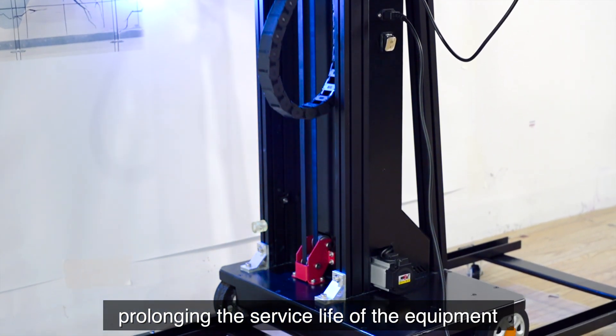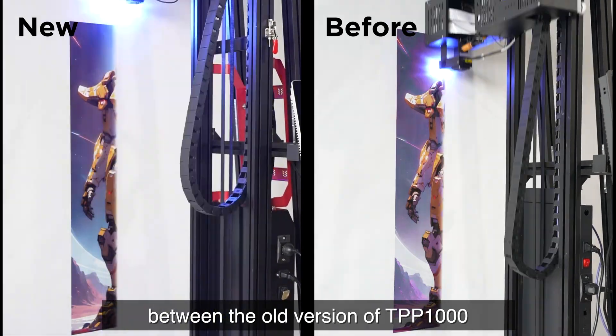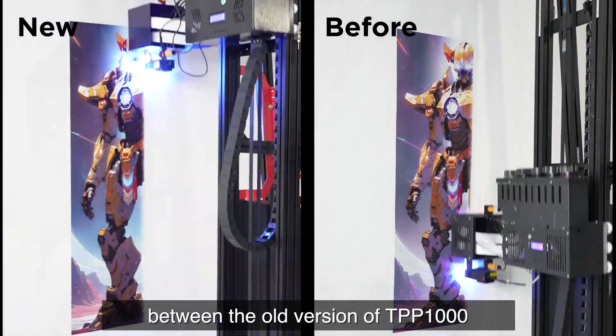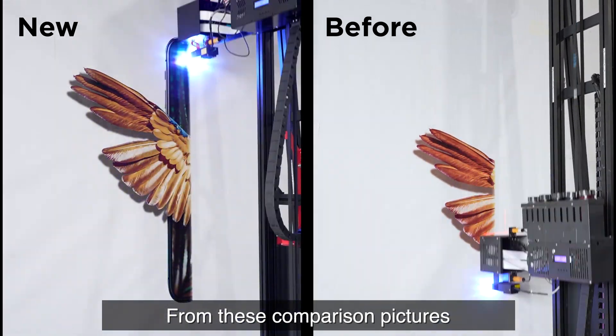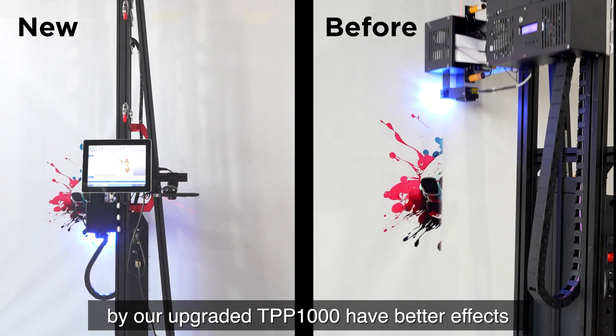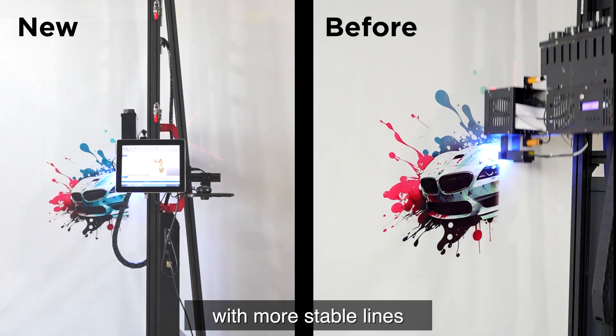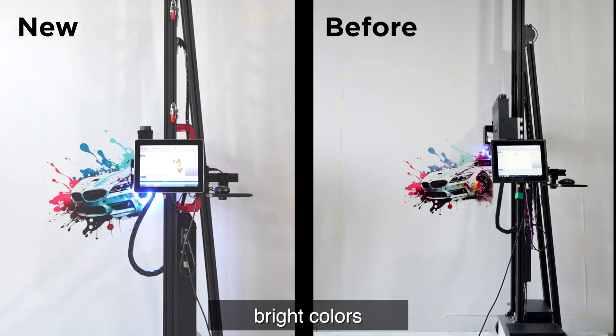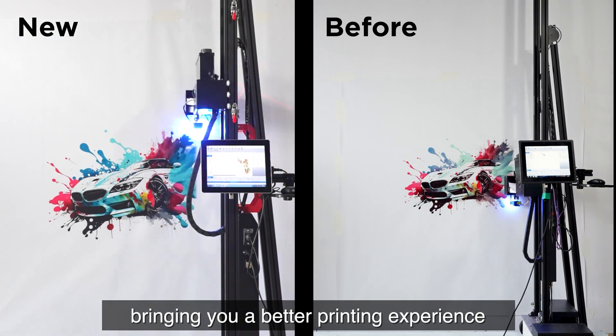This is a comparison of the printing effects between the old version of TPP1000 and the upgraded version of TPP1000. From these comparison pictures, you can see that the pictures printed by our upgraded TPP1000 have better effects, with more stable lines, more ink output, bright colors, and higher restoration degree, bringing you a better printing experience.